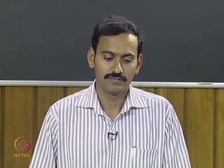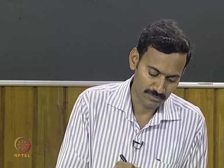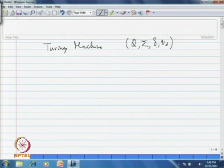In my previous lecture, I introduced the concept called Turing machine, as we need more complicated languages than regular or context-free languages. I introduced the Turing machine as a quadruple: Q, sigma, delta, Q-naught, where Q is a finite set of states, sigma is a finite set, delta is the transition map, and Q-naught is the initial state of this machine.